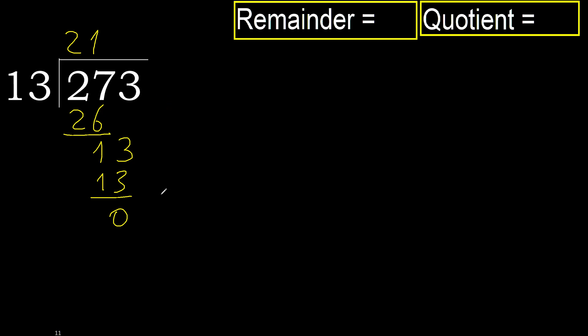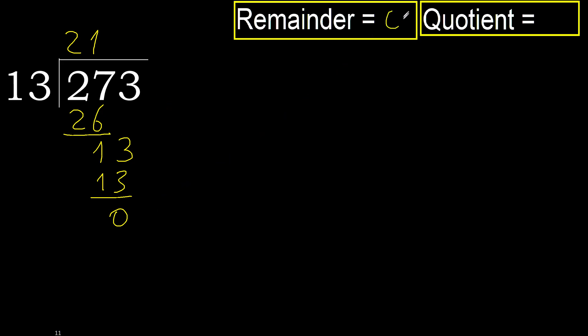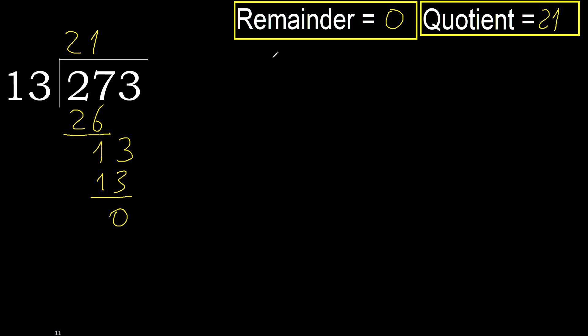There is no more number, therefore finish it. Ok, 273 divided by 13 is 21.